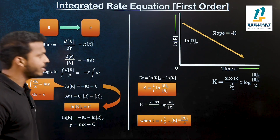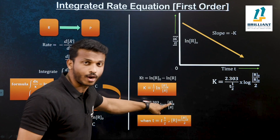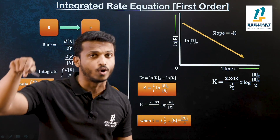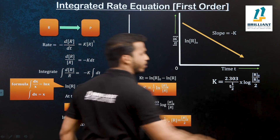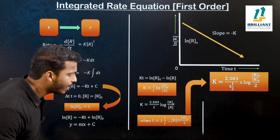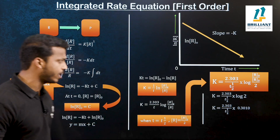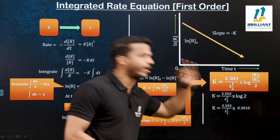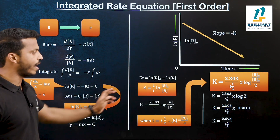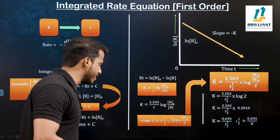Let me substitute time equals T half and R equals R₀ by 2 into the equation. K equals 2.303 by T half into log of R₀ divided by (R₀/2). The R₀ cancels and 2 comes to the numerator, so it becomes log 2. So K equals 2.303 divided by T half into log 2. The value of log 2 is the constant 0.3010. Calculating: 2.303 into 0.3010 equals 0.693. Therefore K equals 0.693 divided by T half, which gives us T half equals 0.693 divided by K.